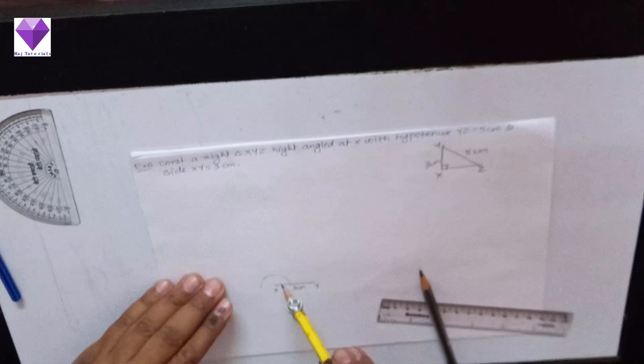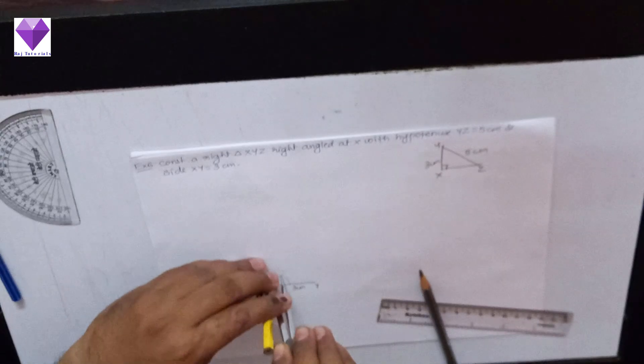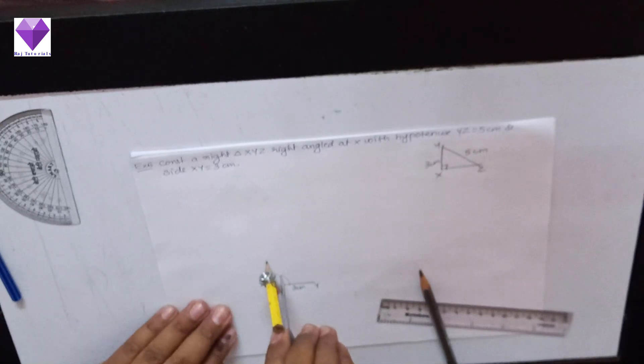Now on this semicircle I will mark 60 degrees and 120 degrees. Now I will bisect 60 and 120 to get 90 degrees.